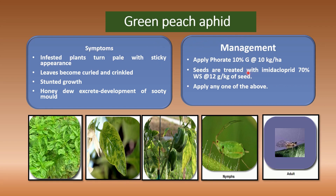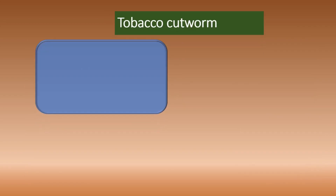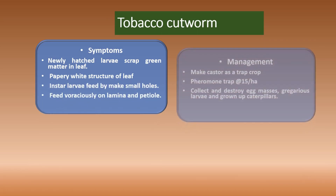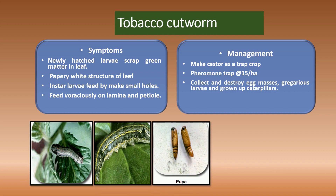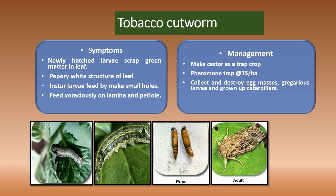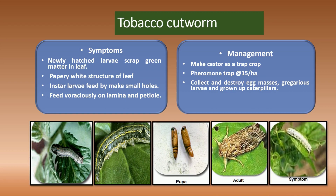Coming to tobacco cutworm — how it affects the crop. The symptoms are: newly hatched larvae scrape the leaves and it looks like a papery white structure. In later larval stages, they feed on small holes. In severe infestation, they feed voraciously on the lamina and petiole — this is the major symptom of tobacco cutworm.